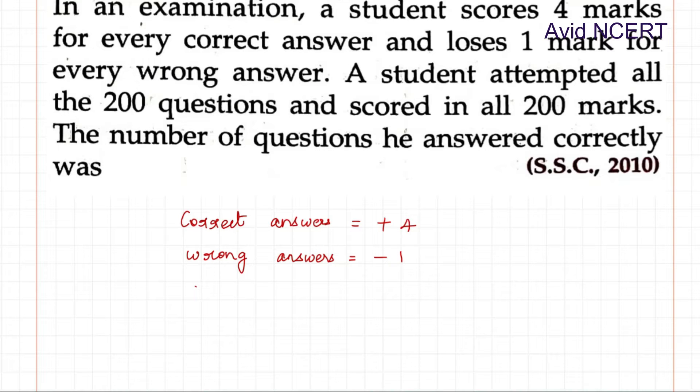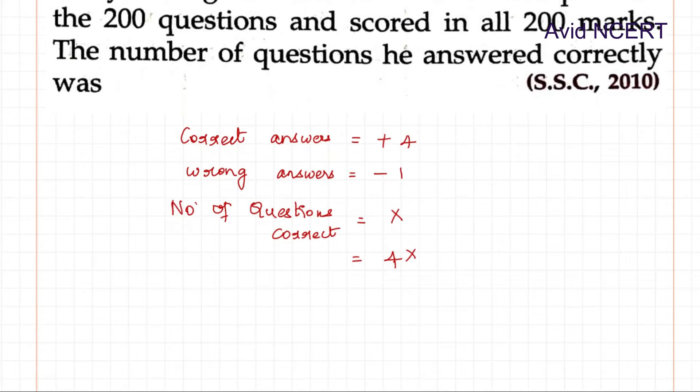The number of questions he got correct, let it be X. Therefore, the marks he would get for that is positive 4X - positive 4 marks into X.